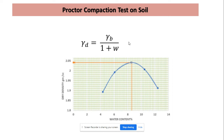Once we determine the dry density, we can repeat this same experimental procedure by increasing or decreasing the moisture content in the soil. A number of trials are done — initially, if we are increasing the moisture content, generally an increase in dry density is observed. The entire test is repeated until we get two consecutive readings where the dry density has started decreasing. From this curve we observe that with increasing water content, dry density first increases and then starts to decrease with further increase in water content.